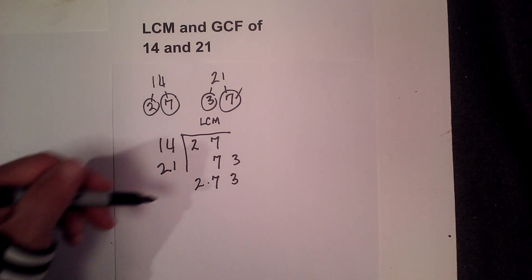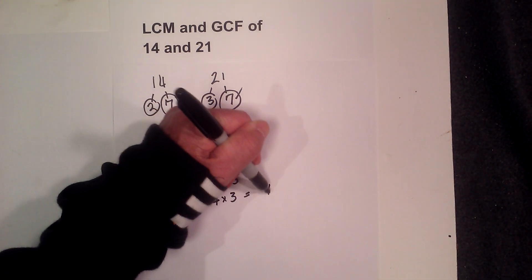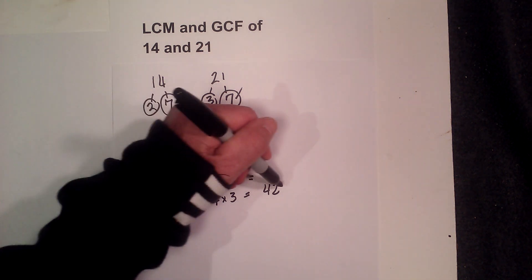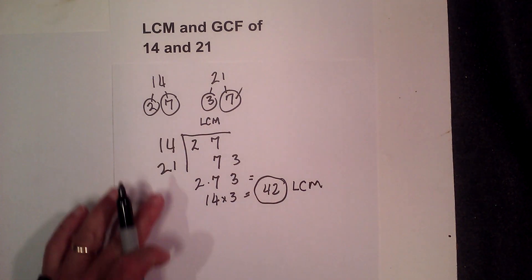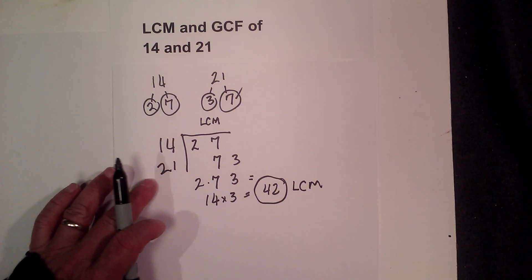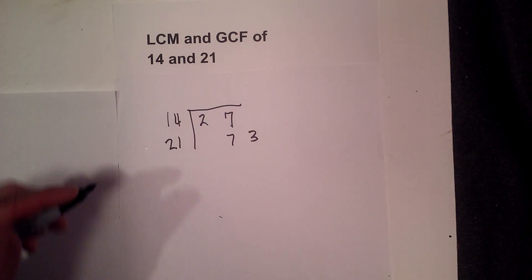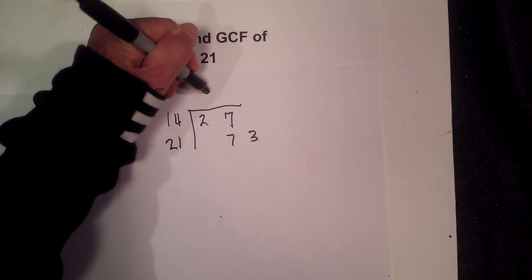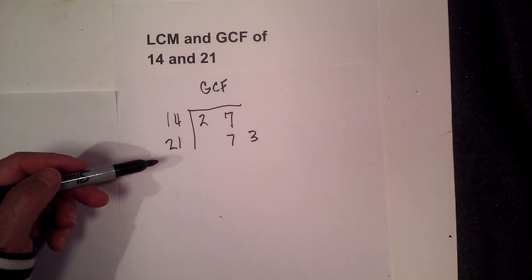I'll rewrite this. Now that is the LCM. Now I can use this very same chart to find the GCF, so I'll rewrite it. Okay, so I've rewritten the chart and I'm finding the greatest common factor. The rule here is, remember, it's the largest factor that will divide into both 14 and 21.